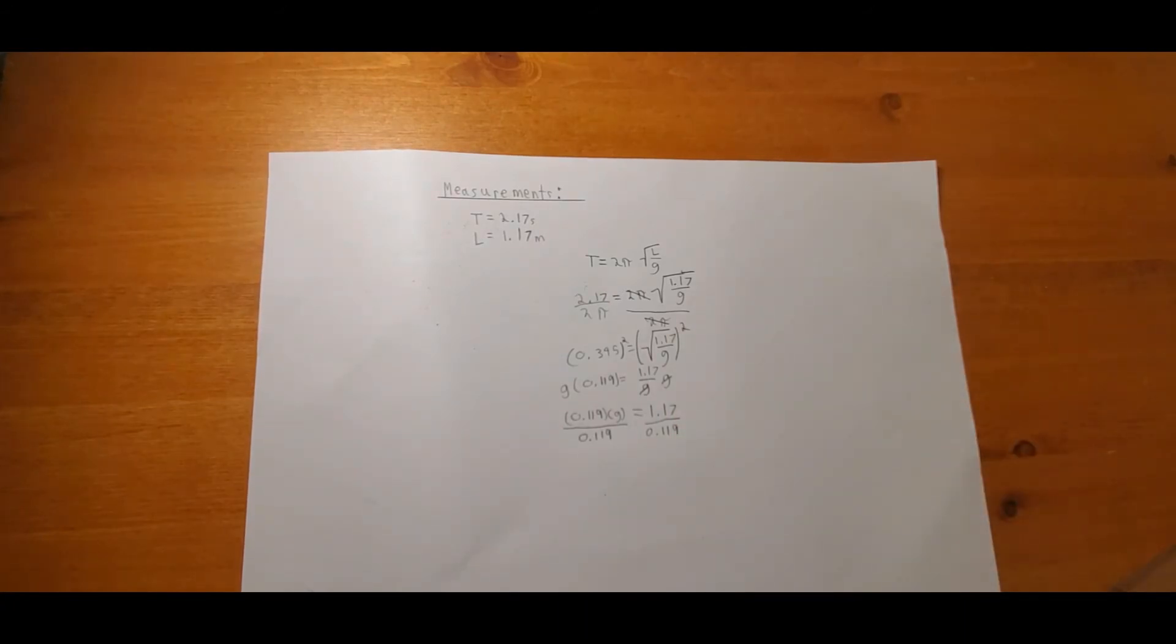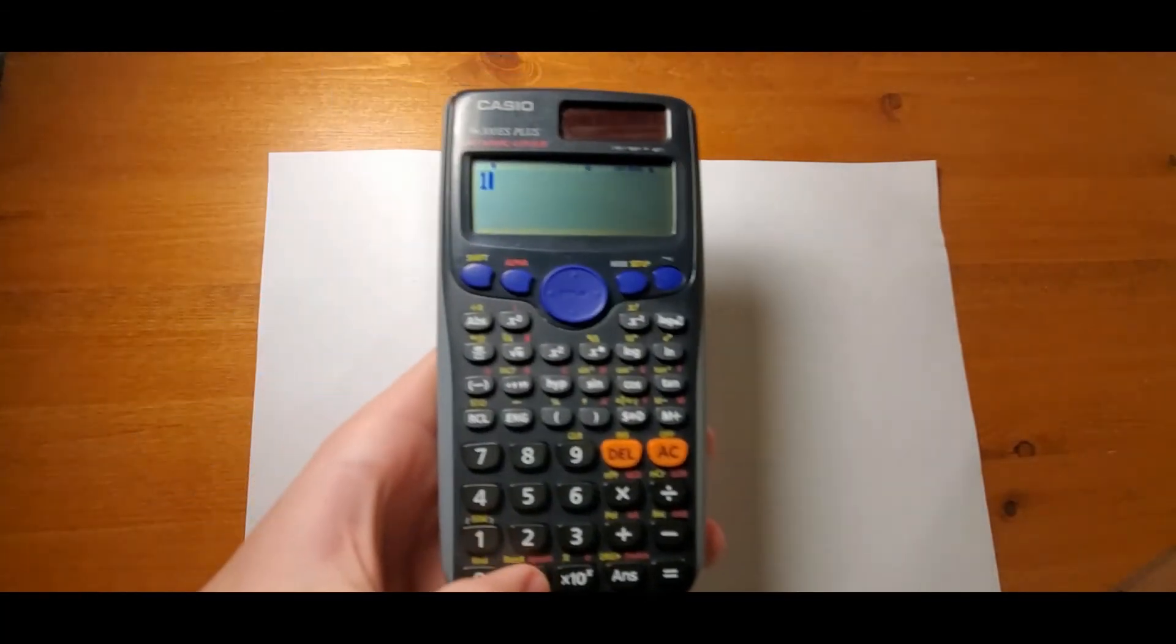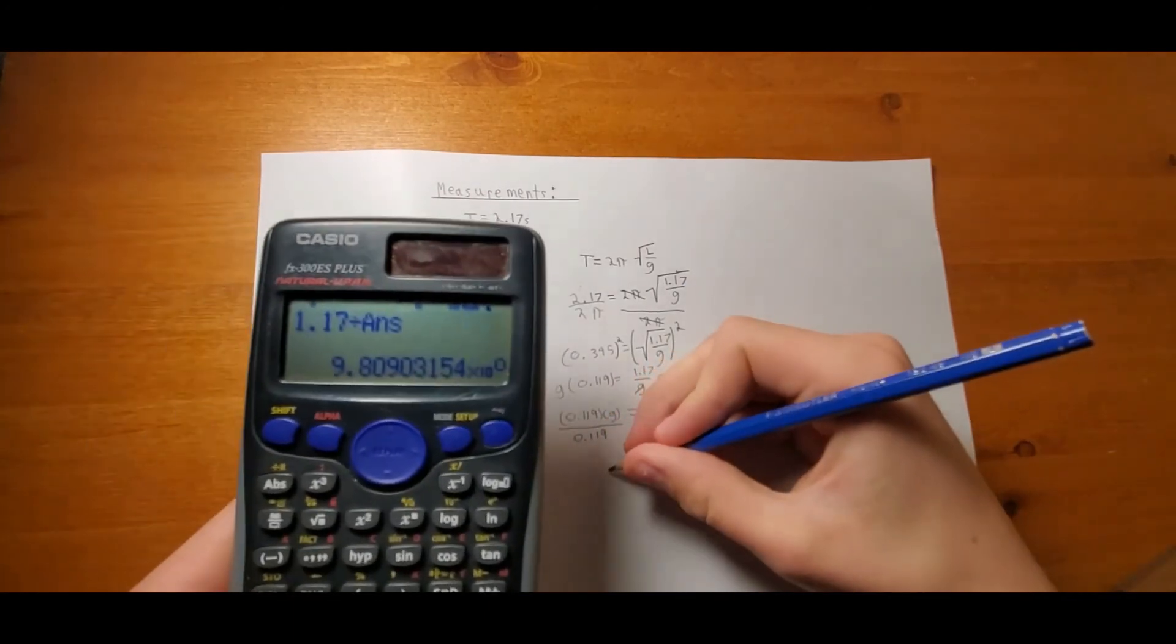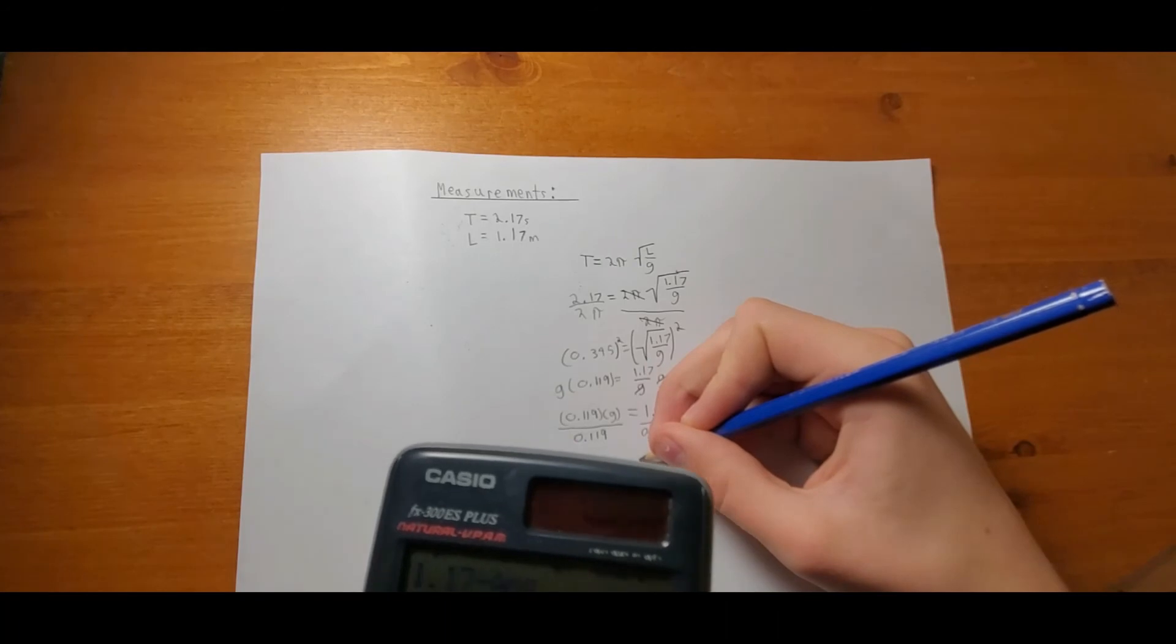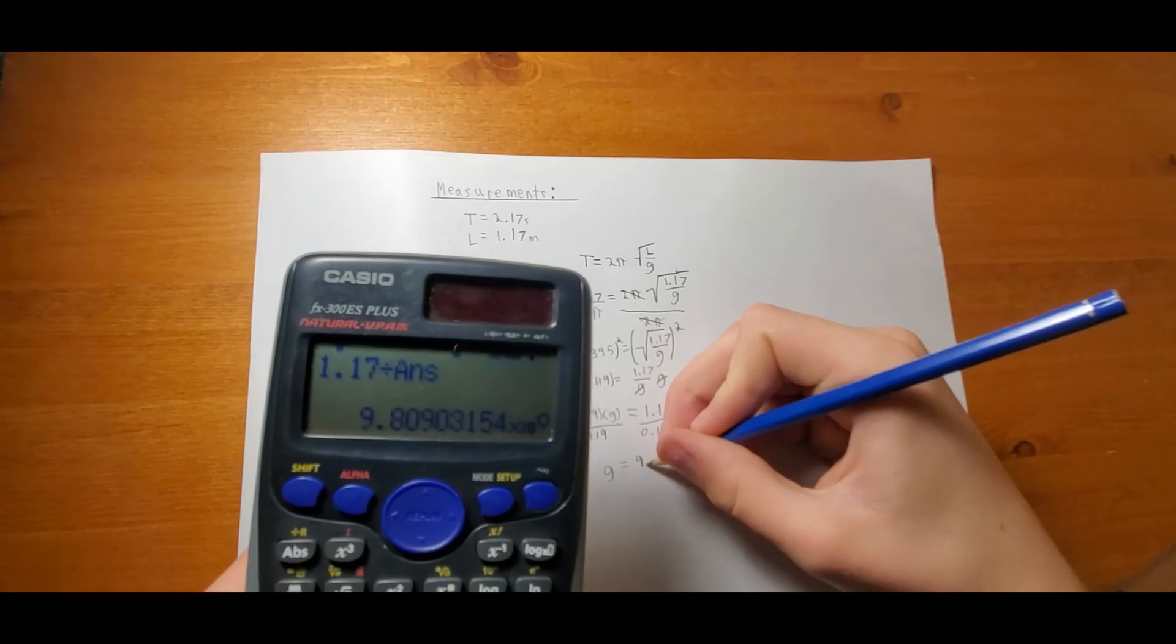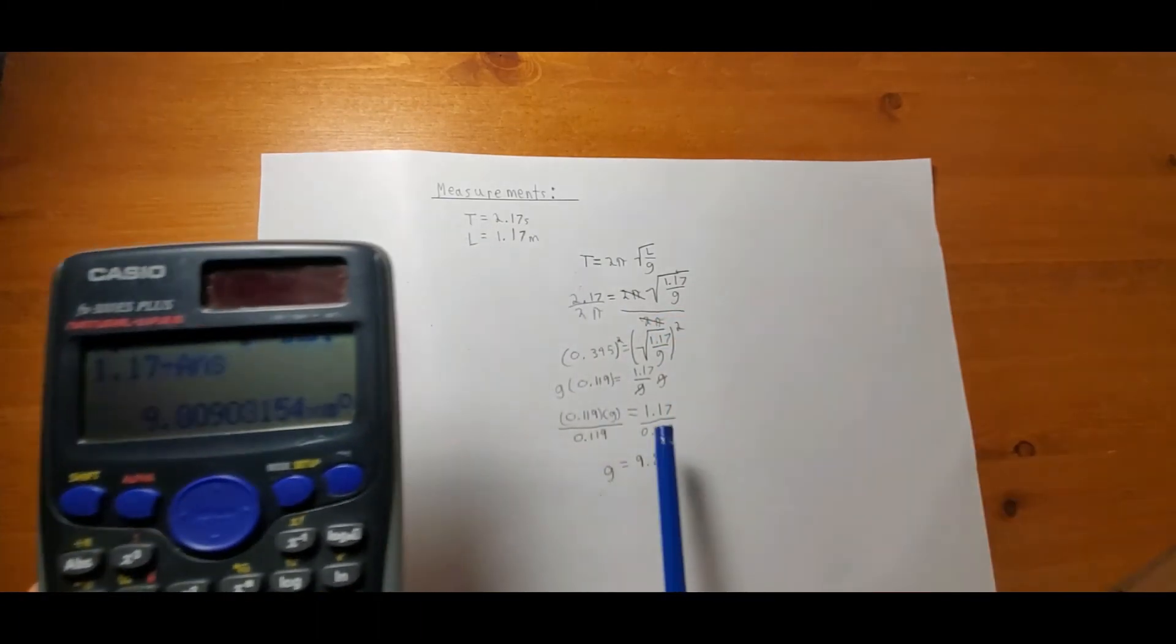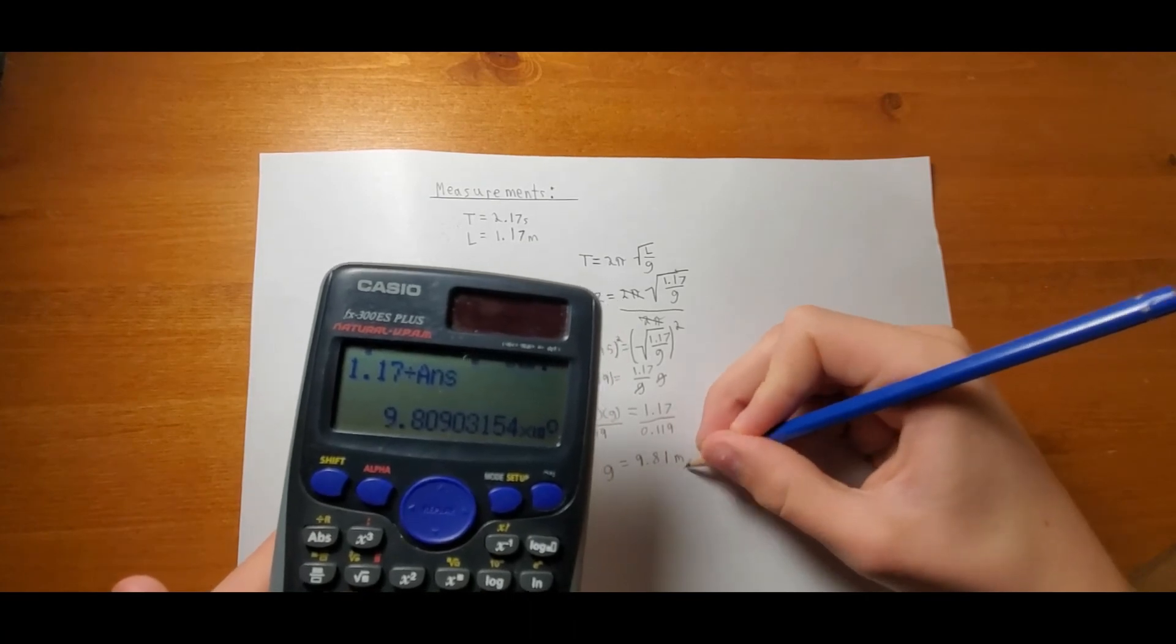So, we now take 1.17 divided by that answer. We get g equal to 9.8. And we're just going to do a significant figure. So, that should be 9.81 meters per second squared.